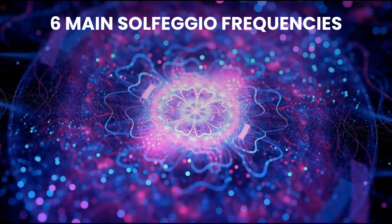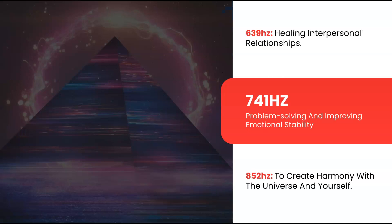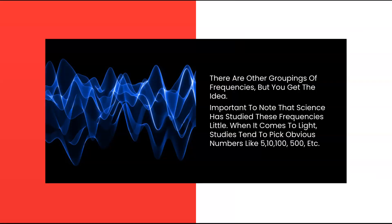There are six main Solfeggio frequencies. 396 hertz is to release fear and guilt. 417 hertz is to release negativity and past trauma. 528 hertz is for clarity, peace, and healing. 639 hertz is for healing interpersonal relationships. 741 hertz is for problem solving and improving emotional stability. And 852 hertz is to create harmony with the universe and oneself. Many of these frequencies can be beneficial, so there's no wrong one to choose.